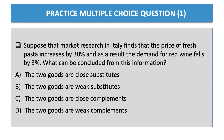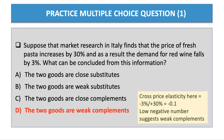Practice question one: Market research in Italy finds that the price of fresh pasta increases by 30%; as a result, demand for red wine falls by 3%. The answer is D — the two goods are weak complements. The cross price elasticity is −3 divided by +30, which gives −0.1. The low coefficient suggests a weak relationship, and the negative number confirms they are complements.